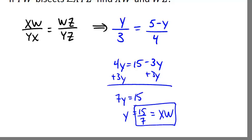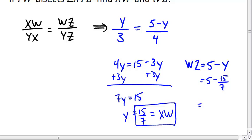But we still need to figure out what WZ is. Good thing we defined earlier that WZ is 5 minus Y, so WZ is just 5 minus 15/7. When we do that, we should end up with the fraction 20/7 as our final result.